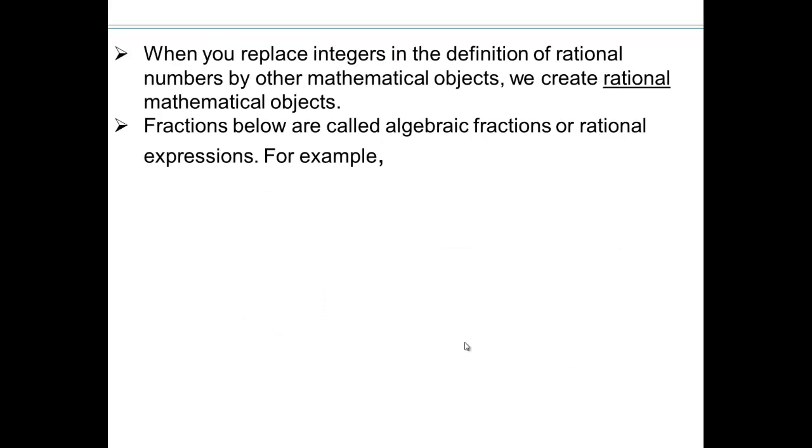So when you replace integers in the definition of rational numbers by other mathematical objects, like if you know what functions are, we can replace them with functions. We can replace them by polynomials. So we get different mathematical objects if you replace the integers with other objects, and they are referred to as rational mathematical objects. For example, let's take the number negative 3 fifths. Take a look at the denominator of 5. I don't have to just replace denominator. I can replace numerator and denominator. But for right now, let's replace the 5 with an x. So if we do that, then this becomes a rational expression. So x is what we replaced in place of 5 and became rational expressions. Here are some other examples. We can put whatever we want on the numerator and denominator and create other objects.